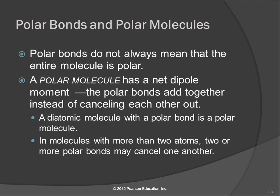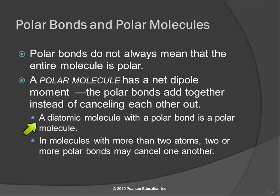Identifying the polarity of bonds is one thing, but just because you have polar bonds doesn't mean the whole molecule is polar. When we talk about a polar molecule, we mean the entire molecule has a net dipole moment. It has polar bonds, but those bonds need to add together rather than cancel each other out. If you have more than two atoms, you can have polar bonds canceling each other out.